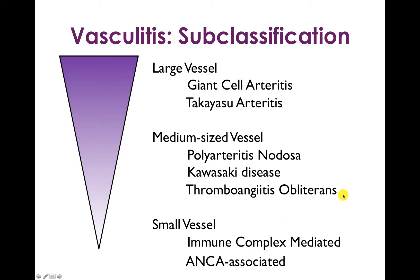That's Raynaud's phenomenon, which we sort of detoured into because it came up with thromboangiitis obliterans. Now we're going to talk about the small vessel vasculitides, which are broken up into immune-complex mediated ones and ANCA-associated ones.